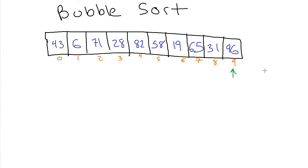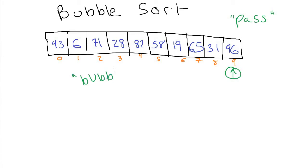We can't compare off the end of the array, so at that point we've successfully made one pass of this algorithm. This algorithm works in multiple passes. After one pass, the array isn't finished — it's not completely sorted. For the first pass of bubble sort, the only element guaranteed to be in the right position is the one in the very last slot. That's sort of why it's called bubble sort: the 96, the biggest item, has bubbled up from wherever it was into the last position. The rest aren't guaranteed, and there's still lots out of order, so we need to make another pass.